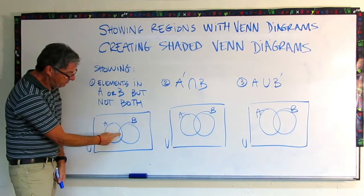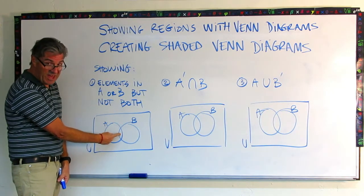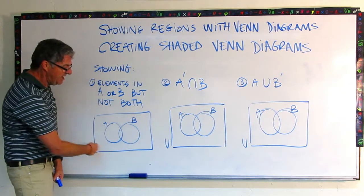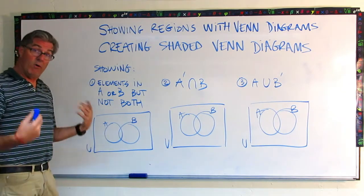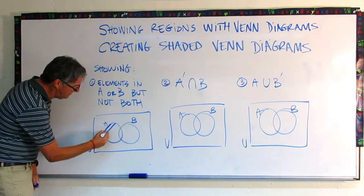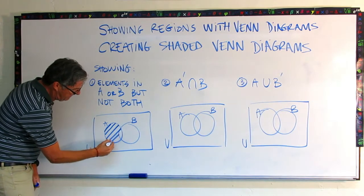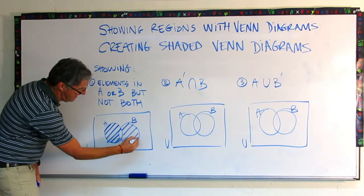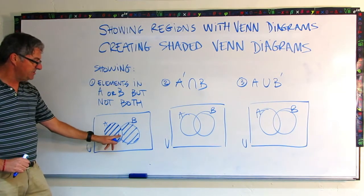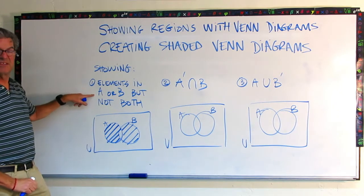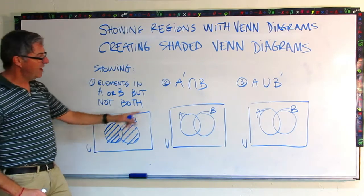So this little region here, that's the intersection. That is both. So we can't shade that. And then the outside area is not in A or B. So we can't shade that. So all that's left of us is to shade the A's that are not B, and shade the B's that are not A. So this center area is unshaded, but the A's and the B's are shaded. So this diagram satisfies that request. Let's move on.